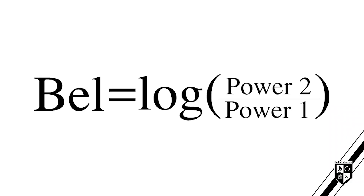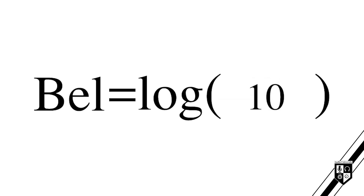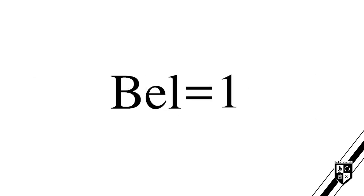The formula for decibel calculations will make a lot more sense if you first understand the relationship between decibels and bells. This is the formula for finding the ratio between two power quantities in bells. Power 1 is the reference power, and Power 2 is the measured power. Let's try finding the ratio in bells between 10 watts and 100 watts. Dividing 100 by 10 gives us the ratio between the power quantities, which is 10. Using the log function of the calculator, we can find that the log of 10 is 1. Therefore, the ratio between 10 watts and 100 watts is 1 bell.